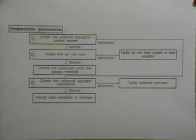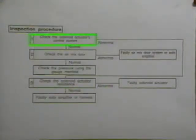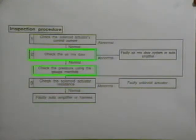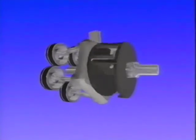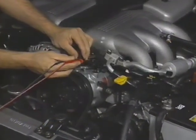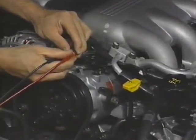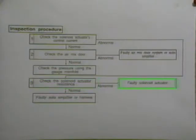Troubleshooting flowcharts should also be used for failures which do not have a specific code. One such case is poor cooling with the compressor clutch engaged. If the preliminary checks did not reveal a fault, refer to the appropriate flowchart. Begin by checking the control current at the compressor solenoid. If the compressor solenoid current is correct, verify proper air mix door operation or proper compressor displacement. Compressor displacement is tested using the refrigerant gauges. Use the output signal recognition mode to drive the compressor from maximum to minimum displacement and note pressure changes. If the compressor solenoid current was incorrect, check the solenoid resistance. If the solenoid resistance is not correct, the solenoid is at fault.